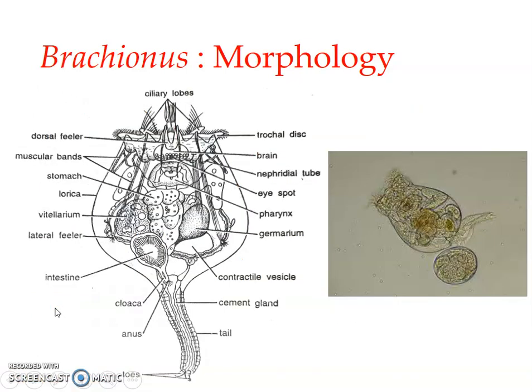Welcome back. We have seen the characteristic features of phylum Rotifera in detail in the previous video. We also saw the life cycle and the unique features of Rotifera. Here we will be discussing the example Brachionus, its morphology and its unique features.